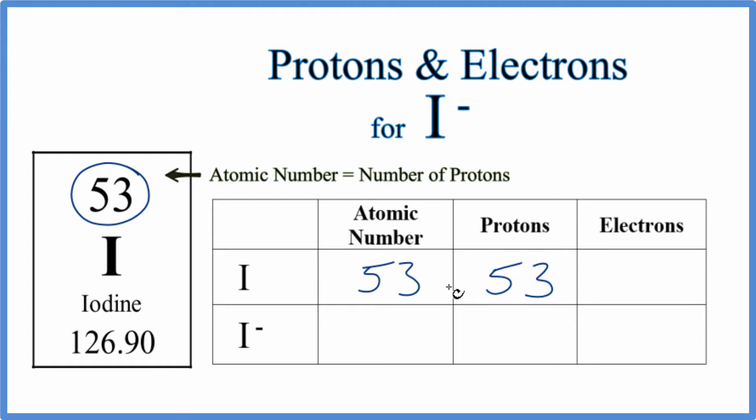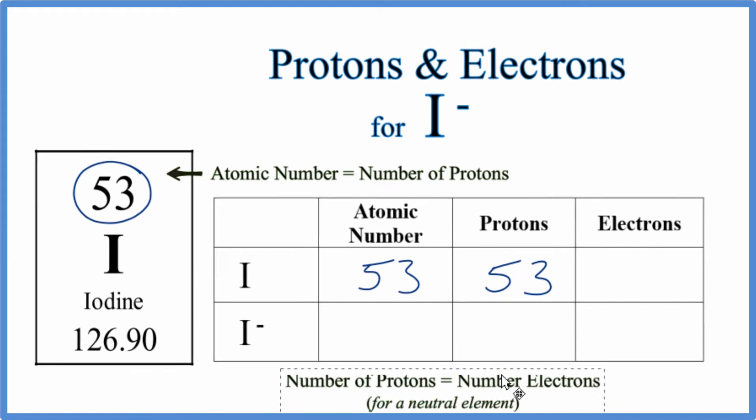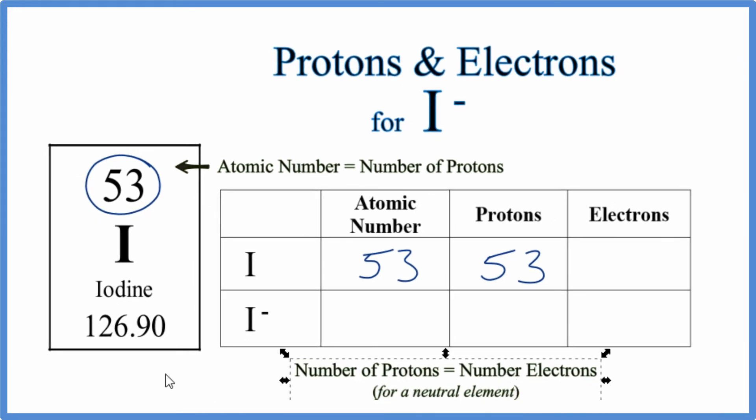We have that information when talking about these ions and neutral elements. The only thing that's going to be different on our chart is the number of electrons. When we look at iodine, just neutral iodine, the number of protons equals the number of electrons since this is neutral. Positive and negative are balancing out, that's why it's neutral.